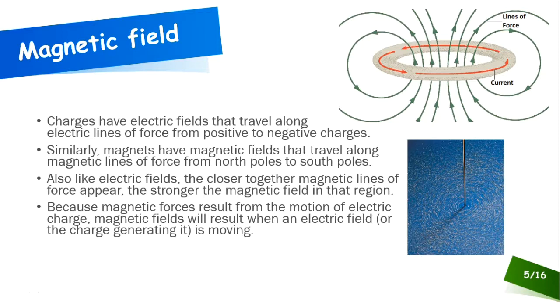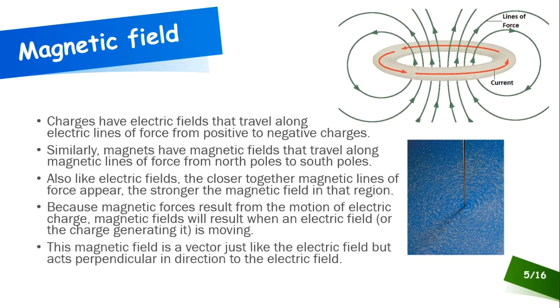If electric charges are in motion, you're going to get a magnetic force. Magnetic fields result when electric field is moving. So if you put an electric field in motion, then you're going to get a magnetic field. Every electric charge has its own electric field. So if you put the charge in motion, the electric field surrounding that charge will be in motion. Electric fields we saw earlier were vectors. Same thing with magnetic fields. Magnetic fields are also vectors. But they act perpendicular in direction to the electric field.